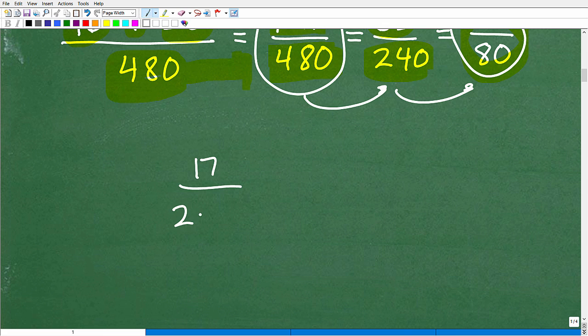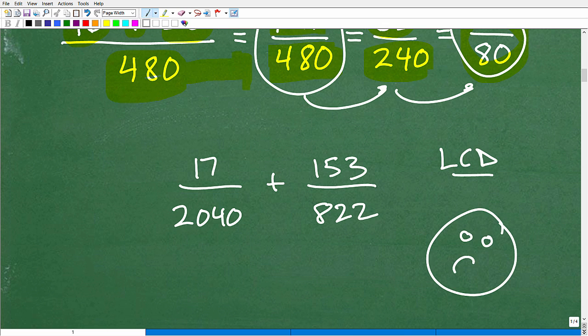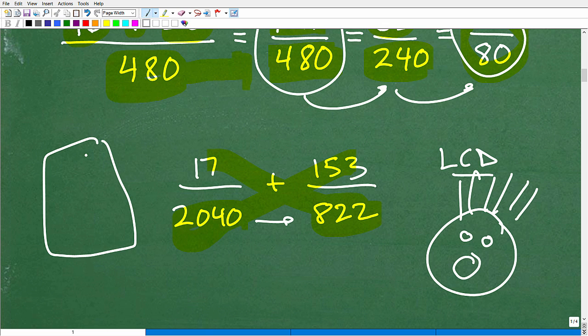So if I had, think about it. If I had like 17 over 2040 over 153 over 822. Imagine doing that problem. You're like, okay, I'm going to have to find the LCD. Most people's expressions might be like, yeah, no, thank you. Now, imagine if you knew this technique, this bowtie technique. I'm going to go this times this plus this times this. That's my numerator. Yeah, I'm going to be doing multiplication. But even if I have my calculator to help me out, I'll end up with a correct answer. Then I can start messing around, trying to reduce this fraction, whittle it down. But the one thing is I won't have to figure out the LCD. So this is a great technique.